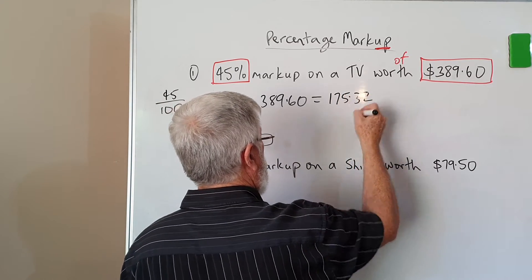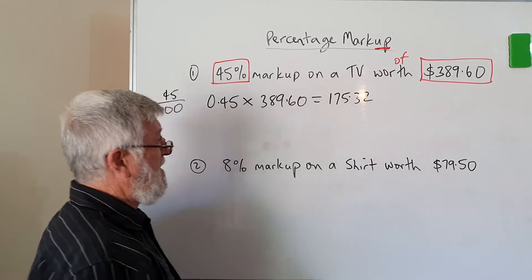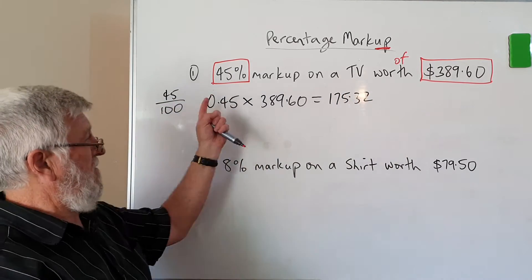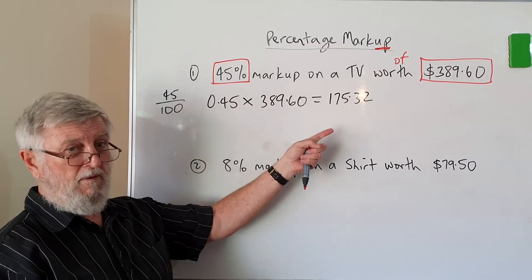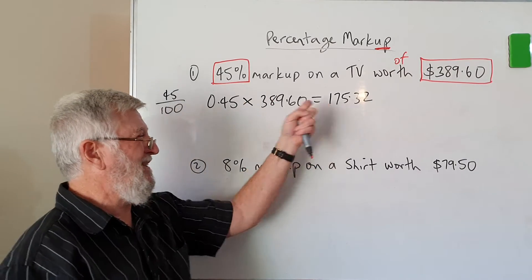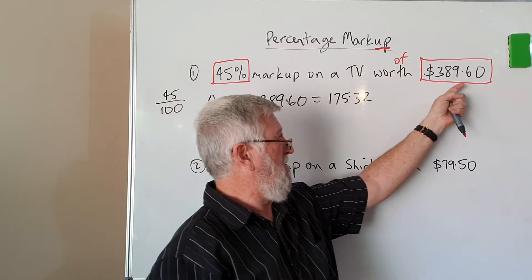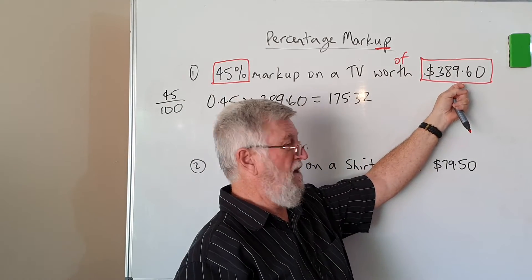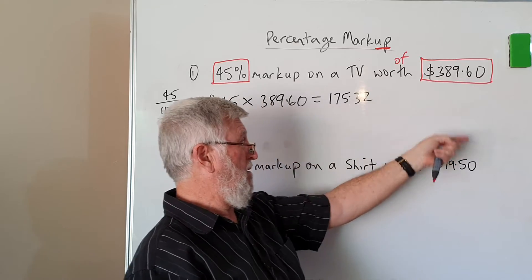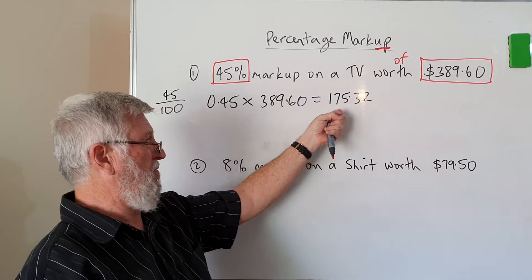Put that in my calculator — I have written here — and that's $175.32. So that's the amount that we're going to mark up. What are we going to do with that amount? We're going to go the original number plus the new amount.